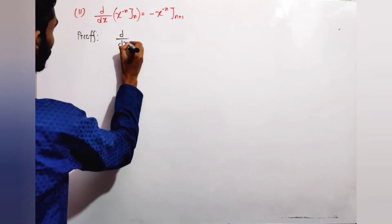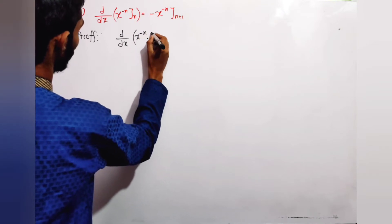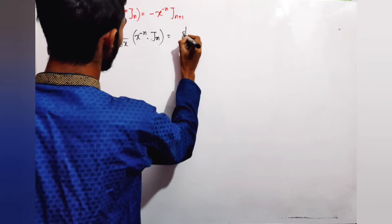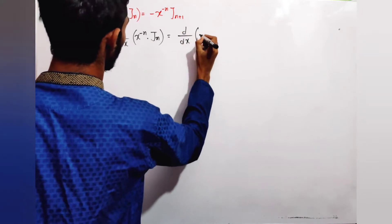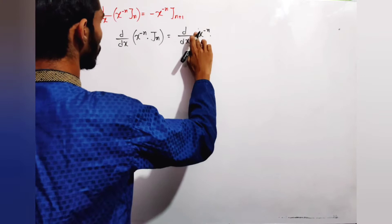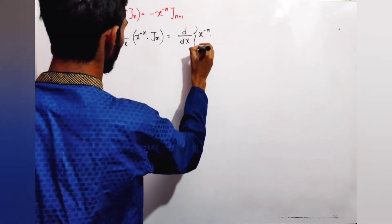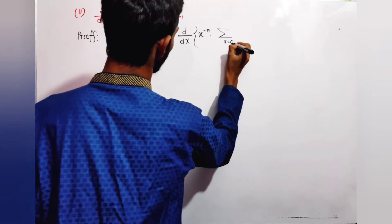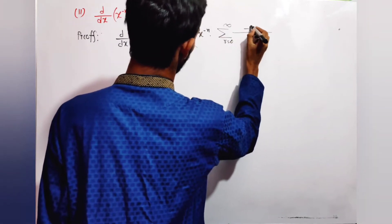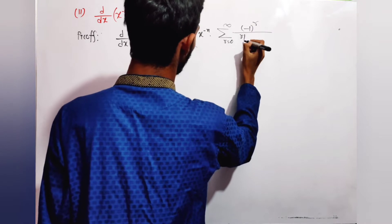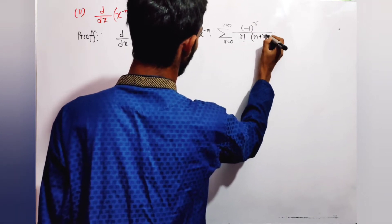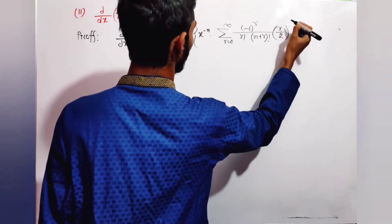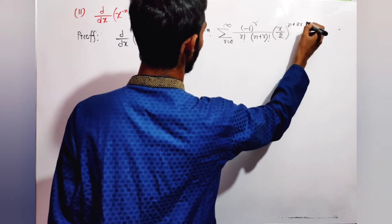We start with d/dx [x^(-n) · J_n]. We substitute the series definition of the Bessel function J_n, where the sum runs from r=0 to infinity of [(-1)^r / (r! · (n+r)!)] · (x/2)^(n+2r).